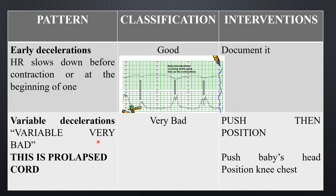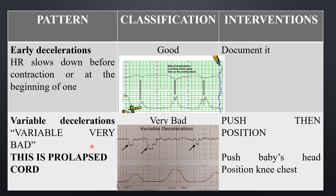Variable deceleration is very bad. Variable decelerations are uneven and unpredictable. From the previous video, variable deceleration is associated with cord prolapse. The intervention is to push the baby's head up and change position. Variable deceleration denotes cord compression.